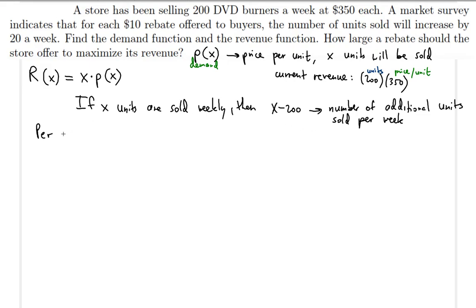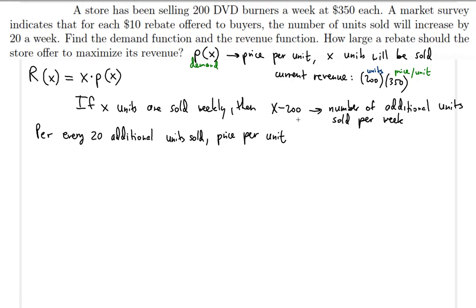Per every 20 additional units sold, the price per unit decreases by $10 — per every 20 additional units sold on top of the current 200. So per every 20 additional units sold, price per unit decreases by $10, because the market survey says for each $10 rebate, the number of units sold increases by 20. We're just rephrasing by switching the order.